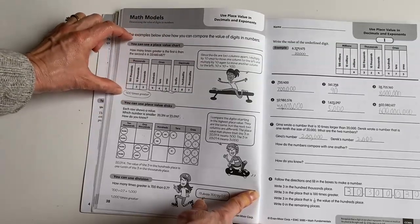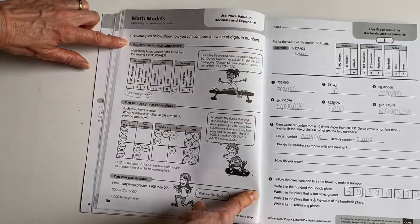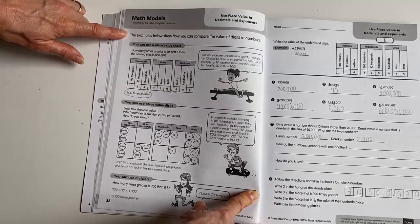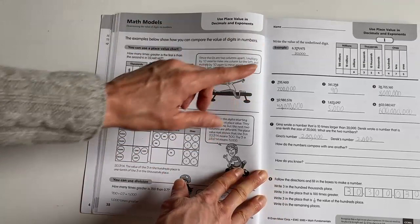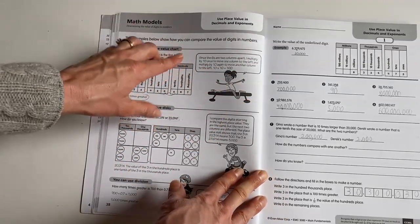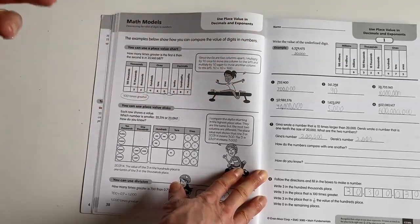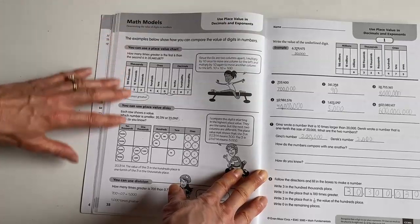Each of the teaching points has its own little band. So the example will show you below how you can compare the values of digits and numbers. And in some of these, I would highlight or have my child highlight the important focus. So we would be highlighting compare the value of digits and numbers. And we would just stop and talk about what does that mean? And so then they're giving them the strategies of how to do that.